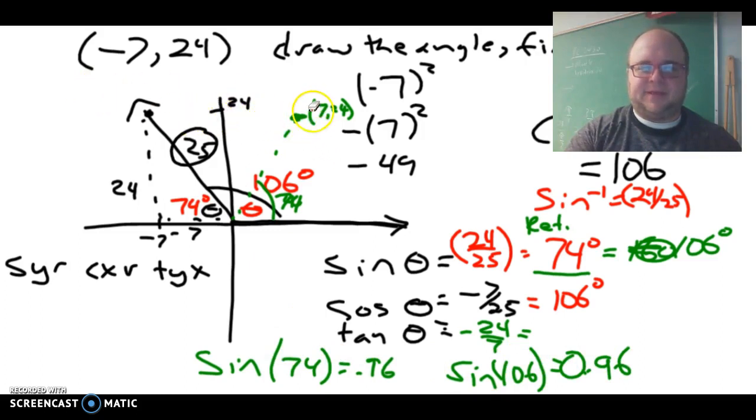There's two points that have the same positive value, so the calculator just gives us the smallest one, or the reference angle, according to Jessica Gable. So you always get the reference angle with sine.